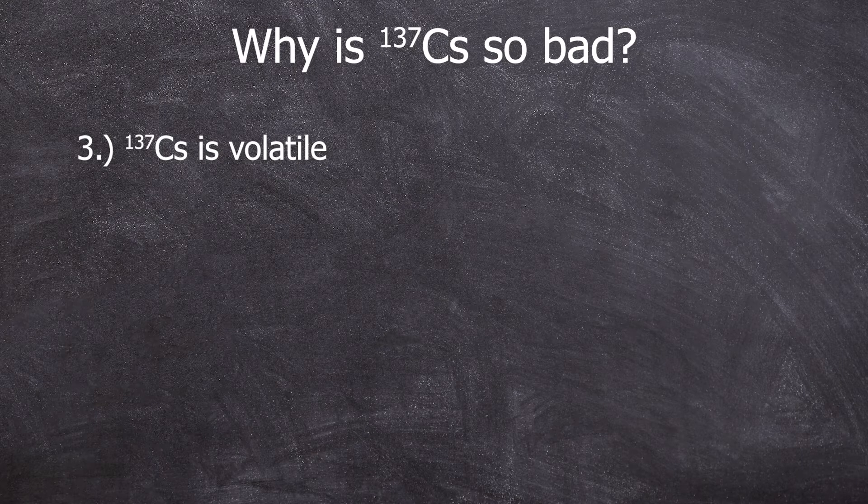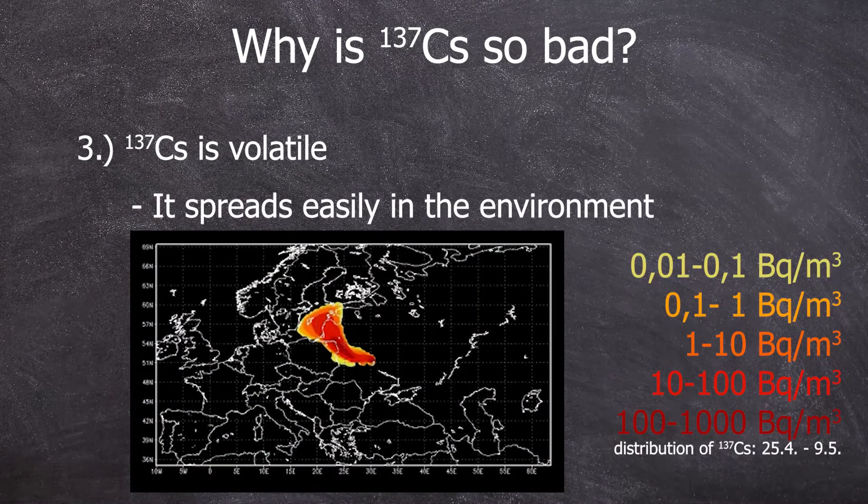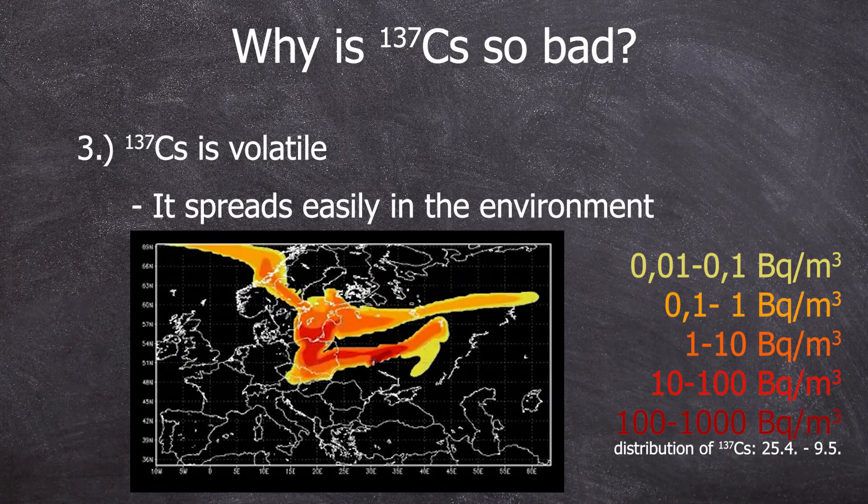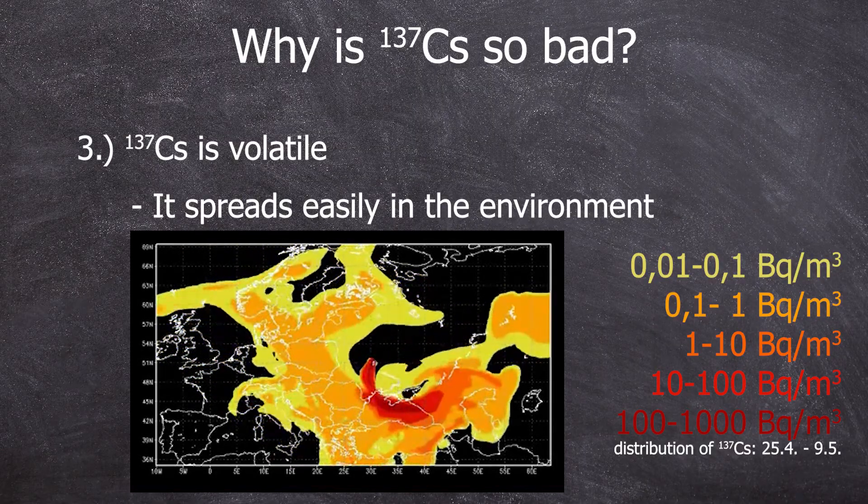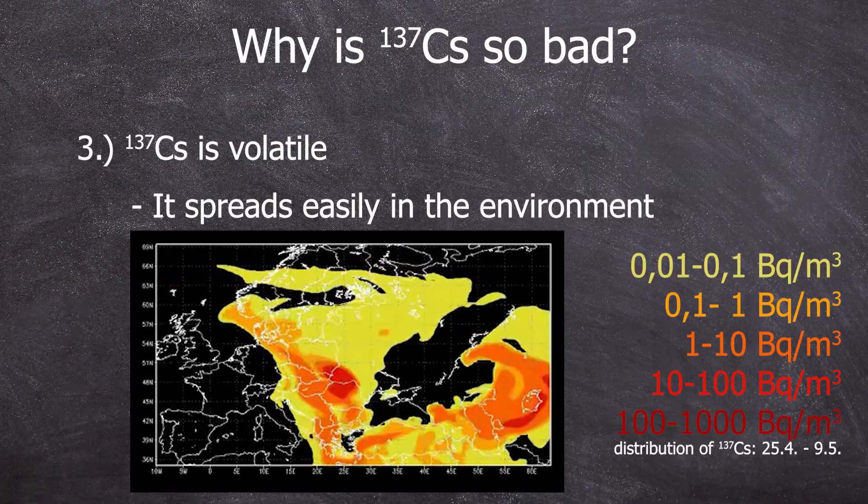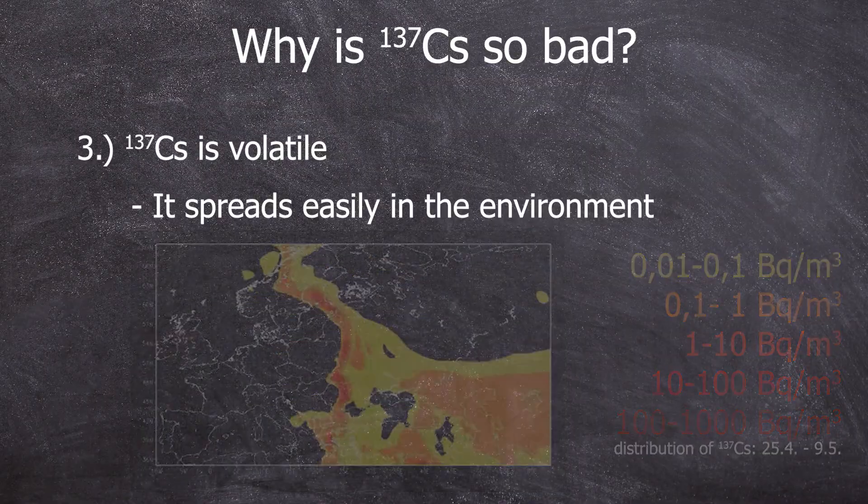Another reason why cesium-137 is problematic is that it's much more volatile compared to uranium, which is also released in a nuclear accident. So not only is it highly radioactive and long-lived, but it also disperses easily.